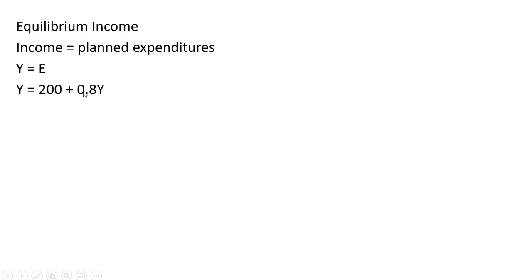So taking our expenditure equation and setting that equal to income, Y, and now we're going to solve for Y. We're going to subtract 0.8Y from both sides. So the left-hand side will now be 1Y minus 0.8Y, or 0.2Y.